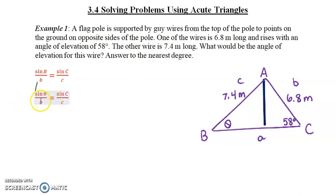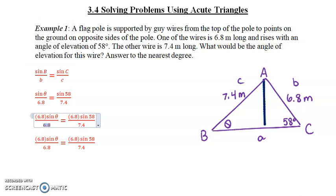The side opposite, we'll look for angle B, so it's theta. The opposite side of B was 6.8. Sine C, angle C was 58 degrees, and then lower c was the side opposite that, and that was 7.4. Then we're going to solve, so both sides get multiplied by 6.8. The 6.8 divides out, we get sine theta, that's what we wanted.